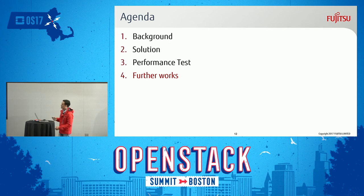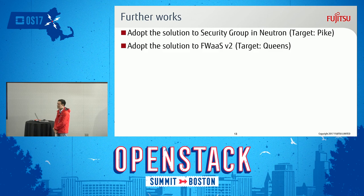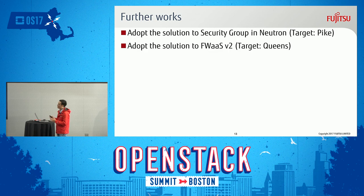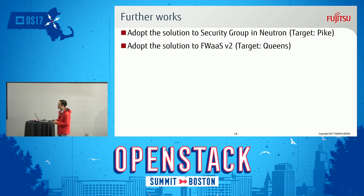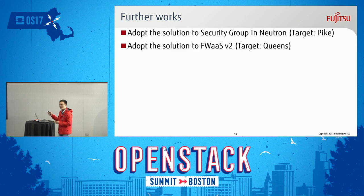The last item I want to bring up is further work. Currently, this solution is already available on the Pike master branch and it is going to be backported to the Ocata stable branch, which is under discussion with the stable team. Now we are trying to adopt this solution to security groups in Neutron, and it is getting good feedback from a Neutron core reviewer and also the Neutron PTL, who encouraged us to complete the project of adopting the new solution to the security group in the Pike cycle. After that, we will continue with Firewall as a Service V2, which is currently under construction and planned to be released in Pike.